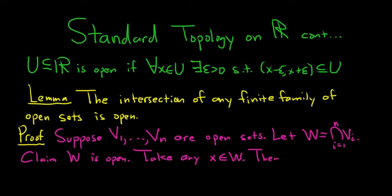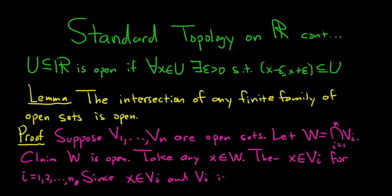Then x is in V sub i for i equals 1, 2, all the way to n. And it's in each one of these. It's in V sub 1, in V sub 2, in V sub 3, and so on. It's in all of them. Since x is in V sub i and V sub i is open, just reiterating it for clarity. So we have x in V sub i, and V sub i is open. So using the definition of open...